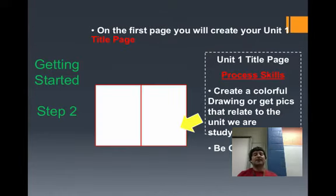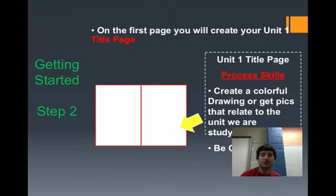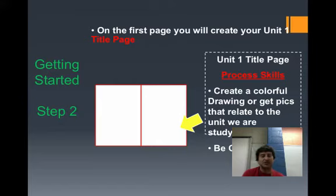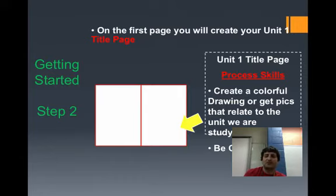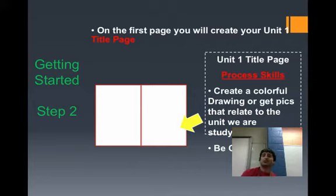For your title page — the process skills one, for example — write 'Process Skills' on one page in your notebook and add color. I also want at least two pictures that relate to that unit. For process skills, that could include things like steps of the scientific method, hypothesis, independent and dependent variables. Hand draw your pictures — I do not want you printing them off a computer and gluing them in, as it gets sloppy. If you're not an artist, no big deal, just try your best. Every title page needs at least two colorful, hand-drawn pictures that relate to the unit, and it takes up just one page.